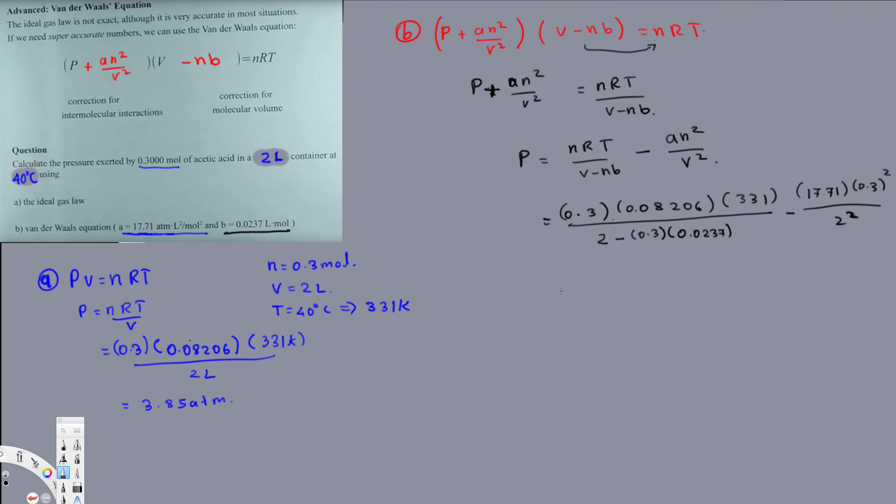If you simplify this one, the top part gives you 7.705 and the bottom part comes out to be 1.993. If you calculate this value, this will give you 0.398.